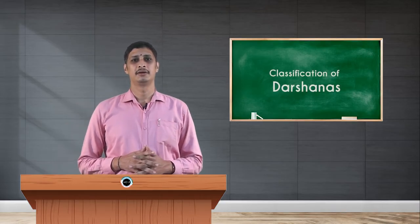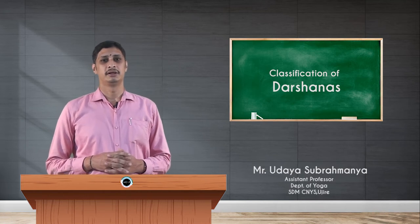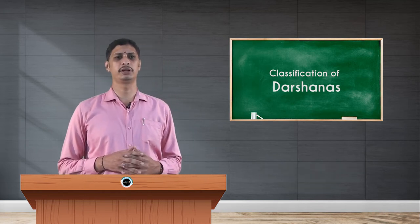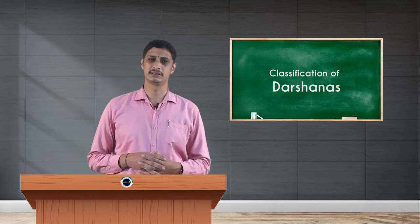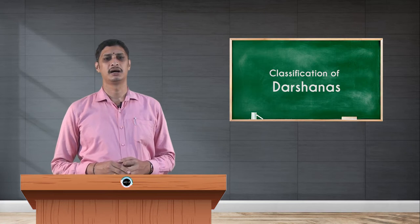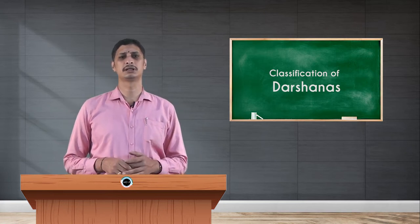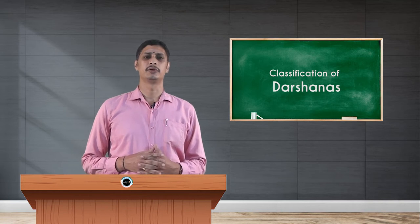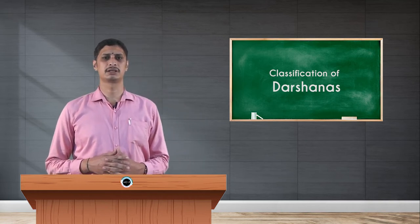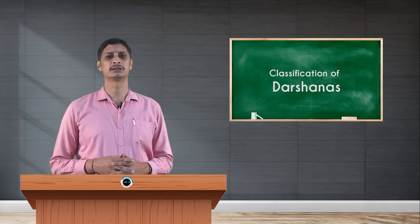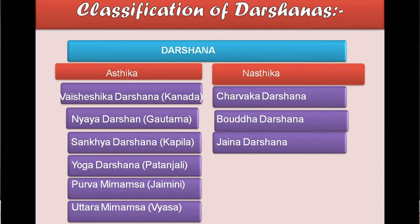Hello students, welcome to the session. In this video we are going to see the classifications of Darshanas. Darshanas, as we know, means to see and realize the real nature of each individual. There are six systems of philosophies named as Darshanas: Nyaya, Vaisheshika, Sankhya, Yoga, Purva Mimamsa, and Uttara Mimamsa. The Nastika Darshanas are Charvaka, Buddha, and Jaina Darshanas.